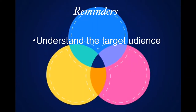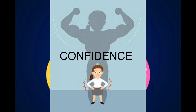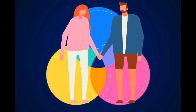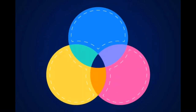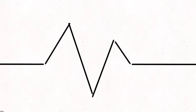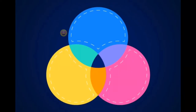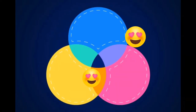Next is understanding your target audience. Understanding your target audience means knowing their interests, culture, beliefs and many other things about them. Knowing the target audience gives the speaker confidence and also gives reassurance to the audience about who the speaker is addressing. Next is creating eye contact. This is one of the most important things in public speaking — it gives connection to the audience and earns their trust.